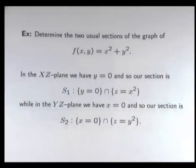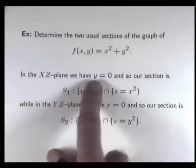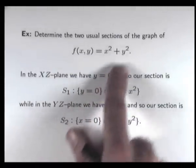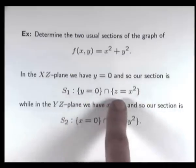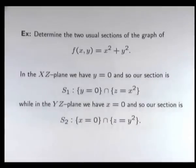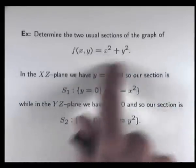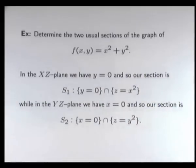Let's do an example. We're given this function and want to calculate the two usual sections of its graph. In the XZ plane, we have Y equals 0, so plugging that in gives Z equals X squared — a parabola lying in the XZ plane. In the YZ plane, we have X equals 0, and we get Z equals Y squared — again another parabola.